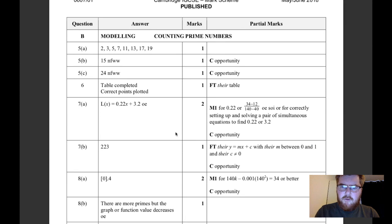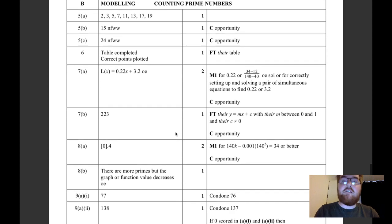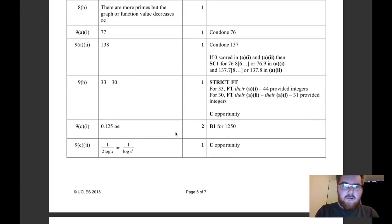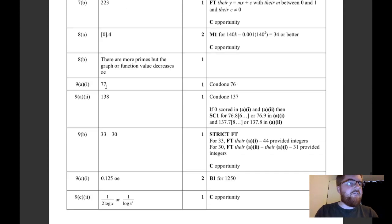Just make sure you show your working. They often are okay if you don't round things correctly. The answer was 77, but if you put 76 they condone it, so they're looking for the right thinking, not necessarily the exact rounded number.